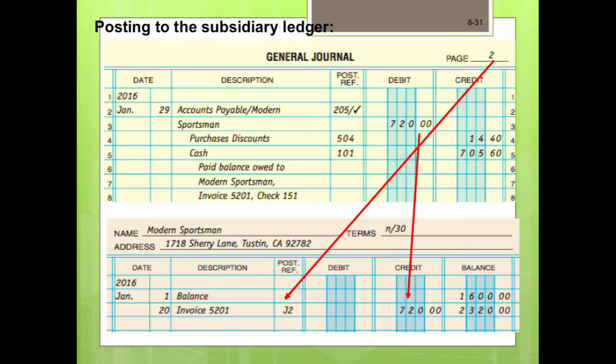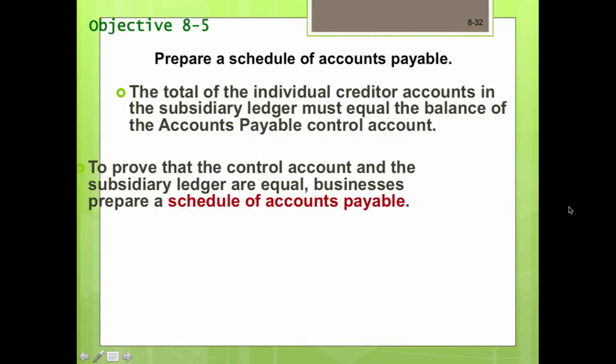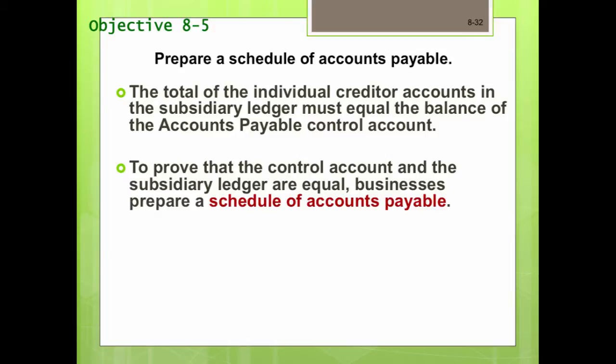Posting from the general journal to the accounts payable ledger is similar to posting to the accounts receivable subsidiary ledger. The posting to the vendor's account in the accounts payable subsidiary ledger is signified by a slash followed by a checkmark after the account number for accounts payable in the chart of accounts. Objective five is to prepare a schedule of accounts payable.